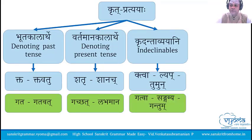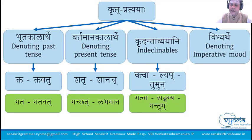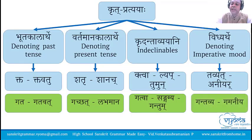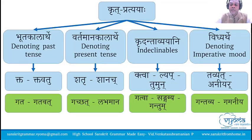Examples of kridanta avyayas: gatva and sangamya from gam dhatu using lepa pratyaya, and gantum using tumun pratyaya. The next set of pratyayas are the vidhyarthaka pratyayas: tavyat, aniyar, and ya. They denote the imperative mood, just like lot-lakara and vidhilinglakara. For example, from gam dhatuhu: gantavyaha using tavyat, gamaniyaha using aniyar — both meaning one should go. These are the krita pratyayas we will be studying in this course.